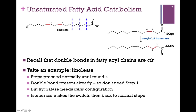Once we get to round 4, as illustrated on the top right, we now have a cis double bond between carbons 3 and 4. Recall that in the normal rounds of beta-oxidation, in our first step we oxidized our saturated chain to produce a double bond. Now we already have a double bond, so we don't need step 1. But the problem is the hydratase that adds water across that double bond needs the trans configuration to do so. So now we need an isomerase to convert our cis-3-4 bond into a trans-2-3 bond.